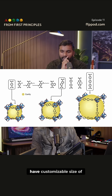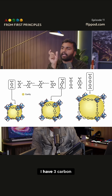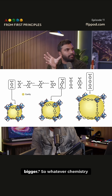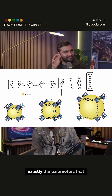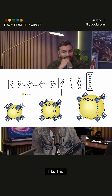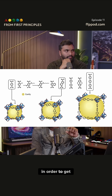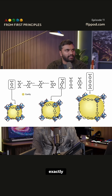What you can do is have a customizable size of the pore. By saying: I have three carbon rings, the pore is going to be this size. I add six, then it's going to be a little bit bigger. So whatever chemistry you want to do — you can build for exactly the size and exactly the parameters that you need. This is really the dial that you can turn in order to get to the outcome that you're looking for. Exactly. Fascinating.